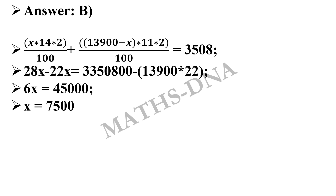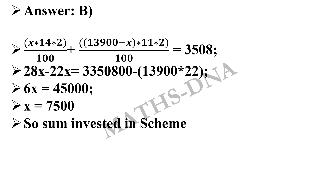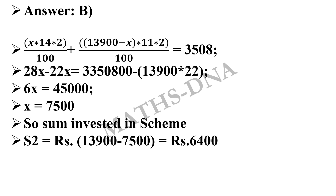There is an option 7,500 in the question and many candidates select that option, but in the question they have asked about the value in scheme 2, whereas X is the amount in scheme 1. So X = 7,500 is not the answer. The amount invested in scheme 2 is 13,900 − 7,500 = Rs 6,400, which is option B, our required answer.